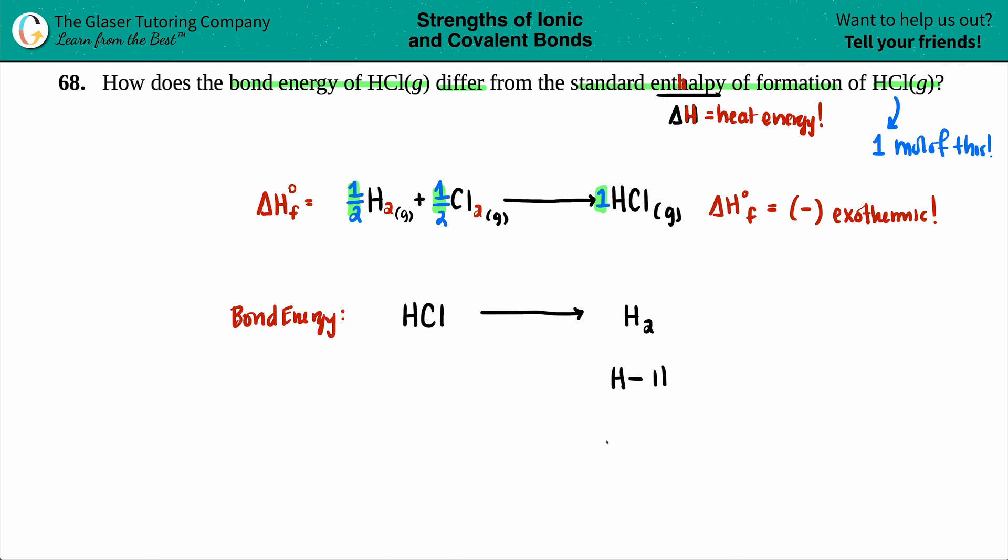It's a single bond if we drew out the Lewis structure. So with bond energies, you never go to your most stable elemental form. You just strip it away and you say, hey, I just have one H and I just have one Cl because on your product side, you should not have any more bonds.